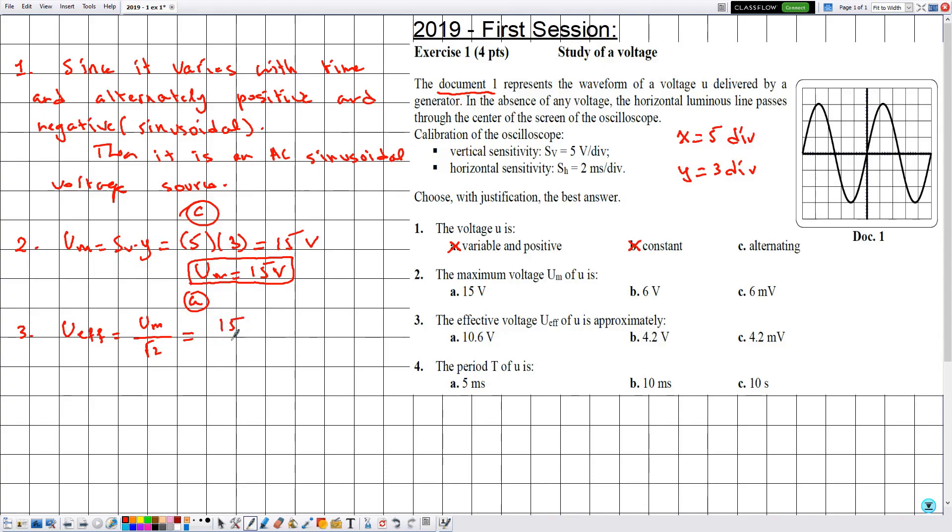The maximum voltage is 15. They didn't give me the value of radical 2. Plugging this on the calculator, the effective voltage is 10.61 volts. So the effective voltage equals 10.61 volts, and the correct answer is a.